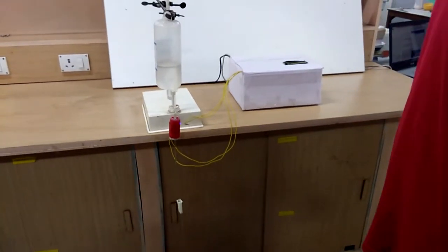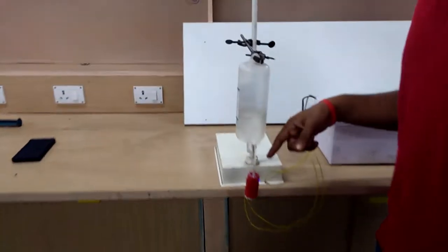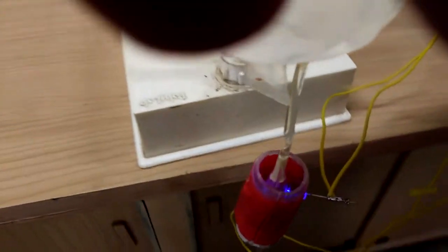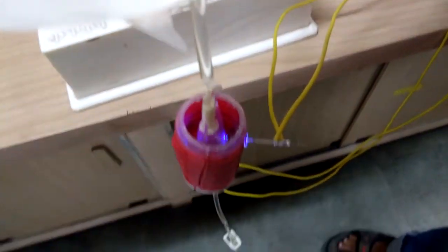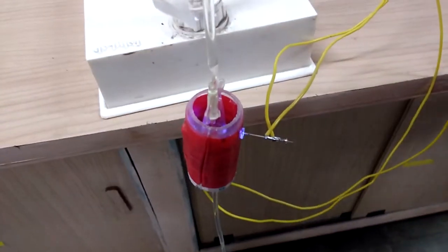This is the saline liquid monitoring device. This is the saline bottle which has been attached to this drip chamber. On to this drip chamber we have mounted this clasp which contains the LED and the LDR.